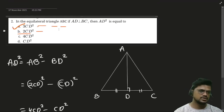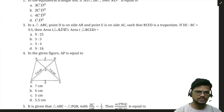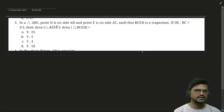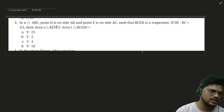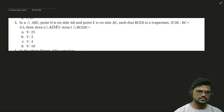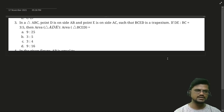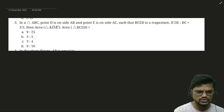Next question: in triangle ABC, point D is on side AB and point E is on side AC such that BCED is a trapezium. If DE:BC = 3:5, find the ratio of the areas of the triangle and the trapezoid. You can solve and give your answer in the chat box — the chat has now been enabled. Mahijit has given an answer; let's verify.